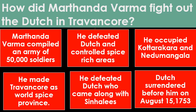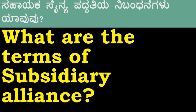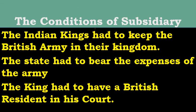These 6 points you can mention one after the other. What are the terms of subsidiary alliance? The Indian kings had to keep the British army in their kingdom. The state had to bear the expenses of the army. The king had to have a British resident in his court.